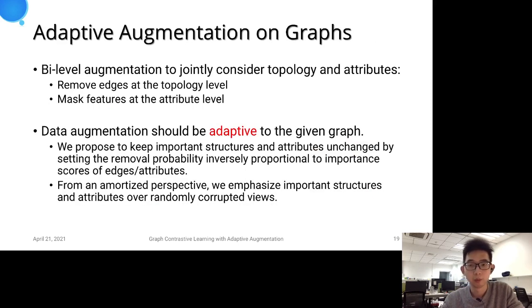In this work, we propose that augmentation techniques used in contrastive learning should be adaptive to the given graph. Following previous approaches, we conduct bi-level augmentation at both topology and attribute levels as well.